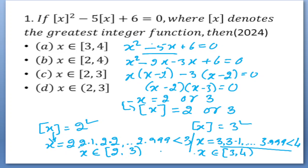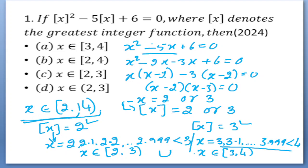The solution is the union of these two intervals. The union of [2, 3) and [3, 4) gives us x belongs to [2, 4) — all real numbers from 2 up to 4, where 4 is excluded. So option B is the correct answer for this question. Let us move on to the next question.